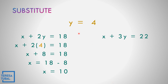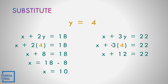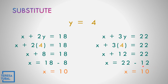How about if we use equation 2? Replace y by positive 4: x plus 3 times 4 equals 22. 3 times 4 is 12, so x plus 12 equals 22. Combining like terms: 22 minus 12, so x equals positive 10. This means any equation you may use to solve for x.